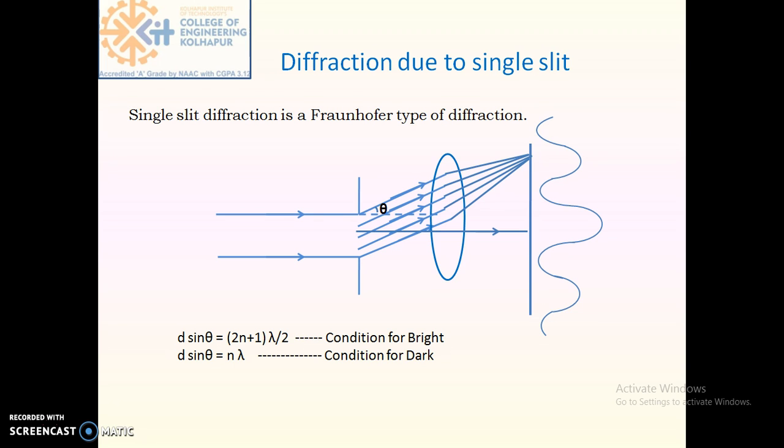If we discuss the diffraction due to single slit, this single slit diffraction is a Fraunhofer type of diffraction. When parallel rays are incident on a slit, most of the rays propagate in the same direction of incidence, forming a central maximum. The rays get diffracted from different points in the slit and at the edges. These diffracted rays get focused by a lens system at a point, forming a first order principal maximum.